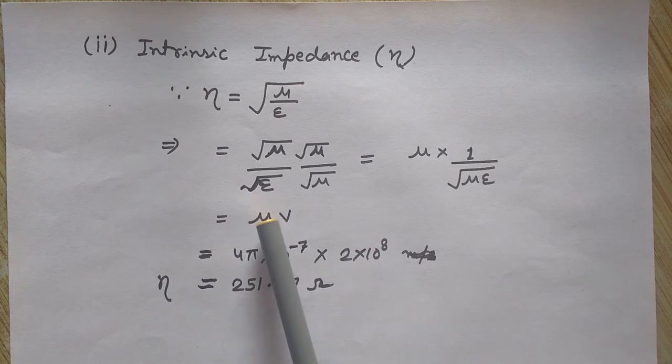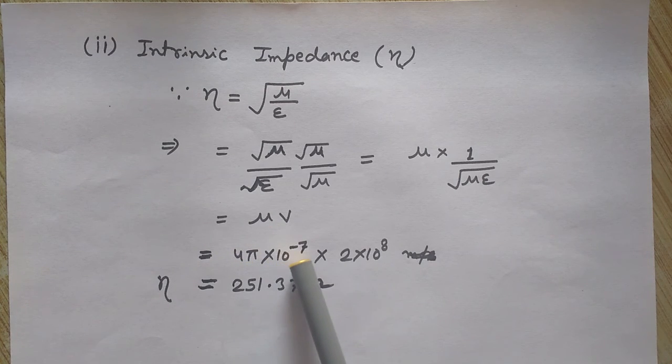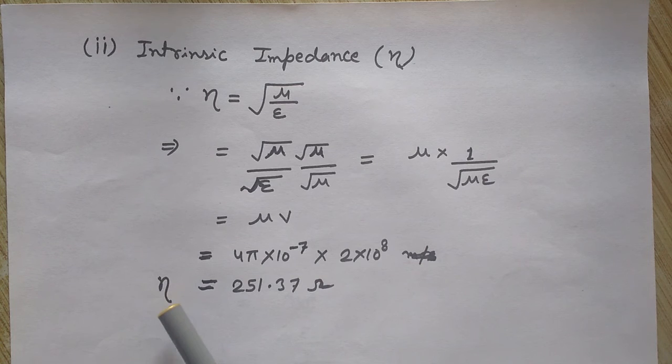And μ, the permeability in free space, is 4π × 10^-7 H/m. So the intrinsic impedance η is approximately 251.37 Ω.